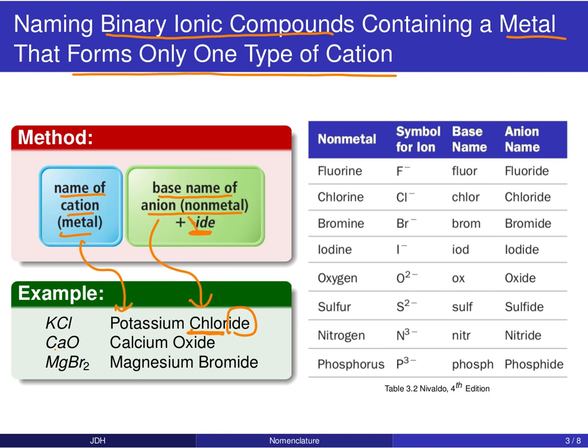Similarly, CaO becomes calcium oxide, and MgBr2 becomes magnesium bromide. A relatively straightforward convention: name of the metal, then the base name of the anion, and tack on an '-ide' ending at the end. Remember, this is only for situations where that metal forms only one type of cation — the first and second columns, or aluminum.